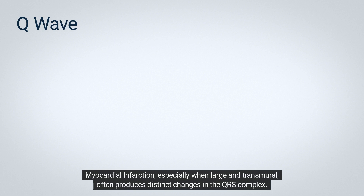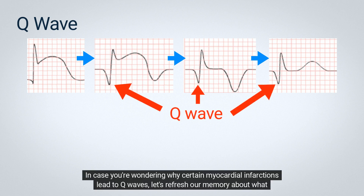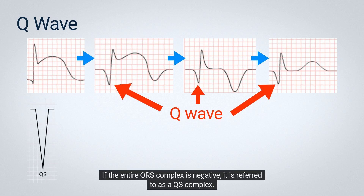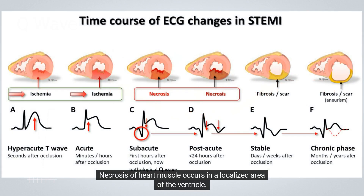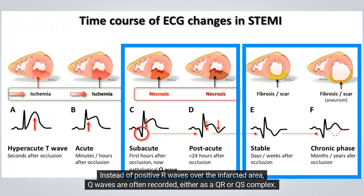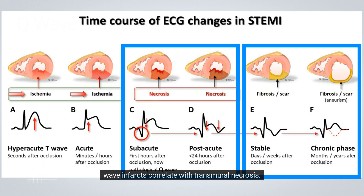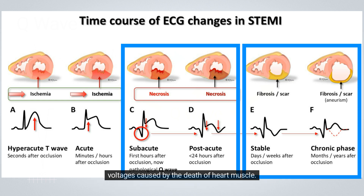Myocardial infarction, especially when large and transmural, often produces distinct changes in the QRS complex. The most characteristic of these changes is the appearance of new Q waves. A Q wave is simply an initial negative deflection of the QRS complex. If the entire QRS complex is negative, it is referred to as a QS complex. During a transmural infarction, necrosis of heart muscle occurs in a localized area of the ventricle, and the electrical voltages produced by this portion of the myocardium disappear. Instead of positive R waves over the infarcted area, Q waves are often recorded, either as a QR or QS complex. However, not all transmural infarcts lead to Q waves, and not all Q-wave infarcts correlate with transmural necrosis. Thus, abnormal Q waves serve as characteristic markers of infarction, signifying the loss of positive electrical voltages caused by the death of heart muscle.